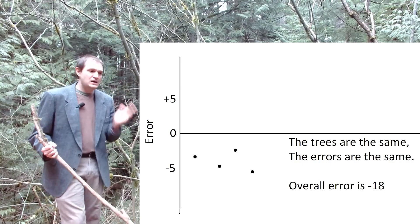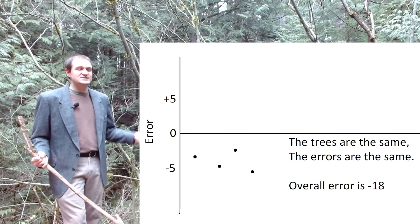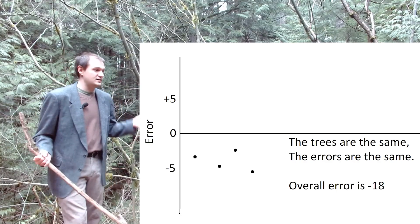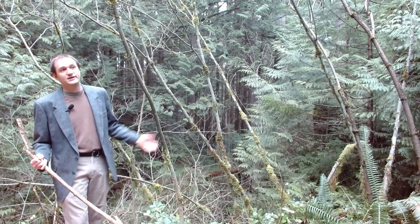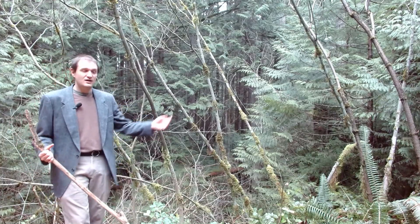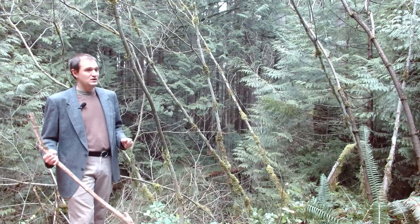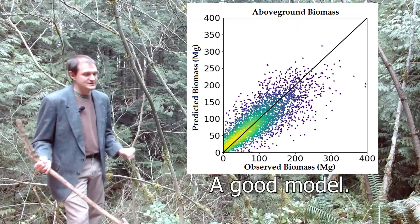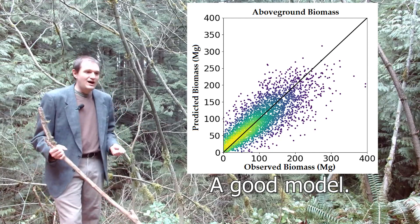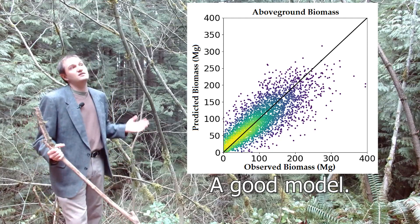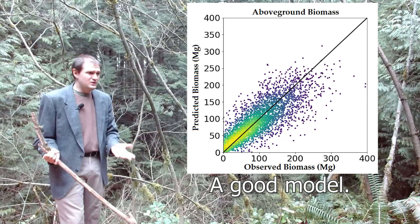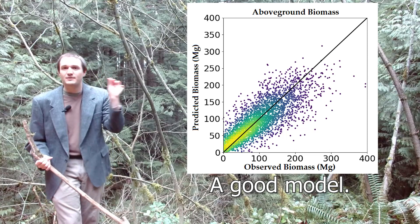Maybe your model will consistently underestimate in sugar maple stands. This is potentially really problematic, because you've applied a model trained on the entire population of several states to only a sugar maple stand where you only make underestimates, and maybe your model on average underestimates by 5% in sugar maple stands. If this is the case, then if you've got 10,000 pixels inside your model area, you're probably going to be off by 5%, not by some tiny minuscule number.